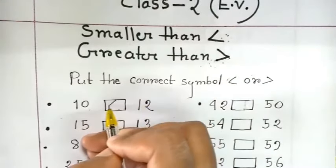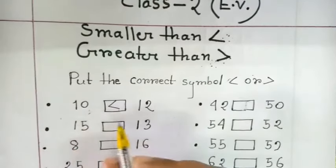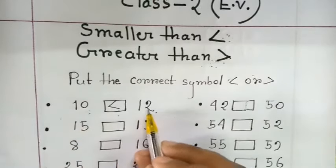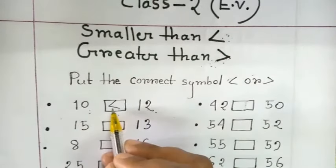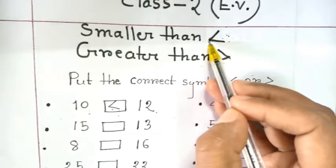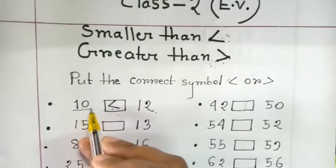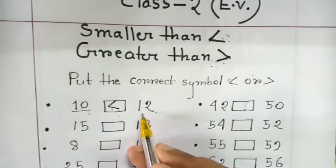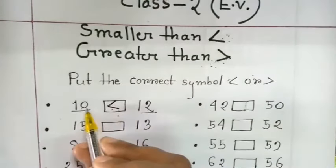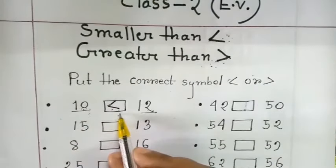This sign means 10 is smaller than 12. The sign points toward the smaller number, and the opening mouth faces the bigger number. So 10 is less than 12.